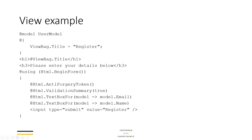Importantly there's no ViewState in MVC. There's an anti-forgery token which you need for form posting, but there's no ViewState. Even on a complex page you won't have 200-300 kilobytes of state information — all of the state is inferred from what's happening in the normal HTML forms.